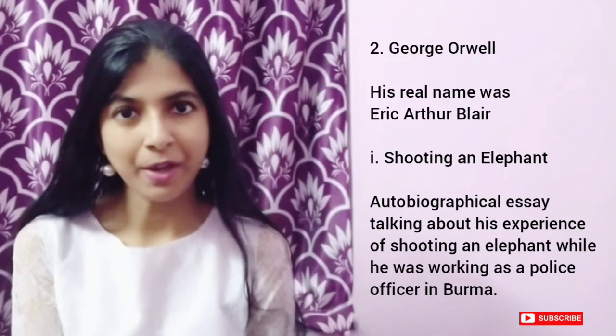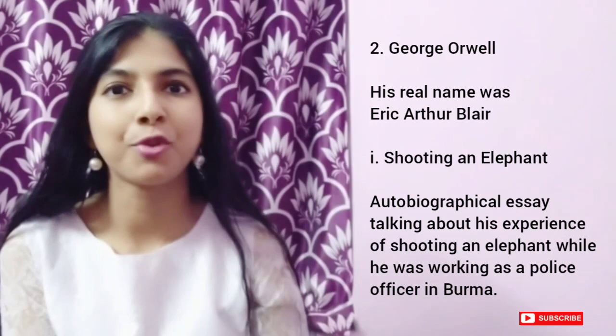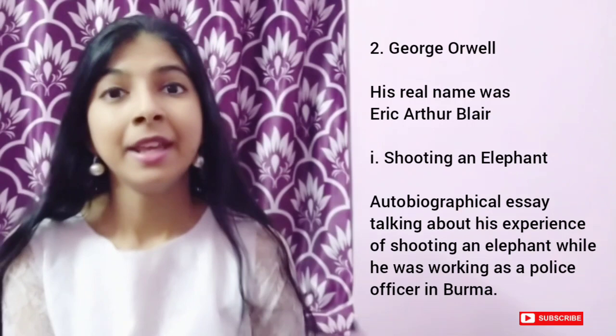Next we have George Orwell, whose real name was Eric Arthur Blair. He was born in Motihari, Bihar in India, and he worked as a police officer in Burma. He wrote the essay Shooting an Elephant, based on his real-life experience of shooting an elephant while working as a police officer in Burma. He became popular for his allegorical novella Animal Farm, which is based on the Russian Revolution of 1917. Basically, Animal Farm is a political satire, and the actual full name of the book is Animal Farm: A Fairy Story.